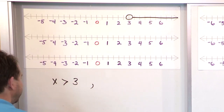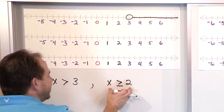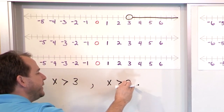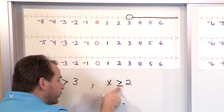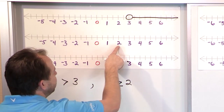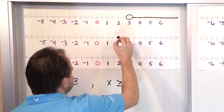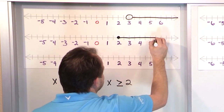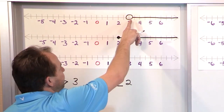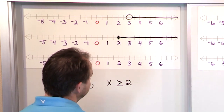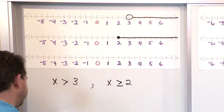Let's look at another simple one. Let's say we have x greater than or equal to 2. This is the same thing, except we're also including the number 2 in the range of x because it's greater than 2 or equal to 2. We represent that by finding the number 2 on the number line and putting a solid dot instead of an open circle, then shading everything to the right. A closed circle means we're including everything to the right of 2, and also including the number 2 itself.